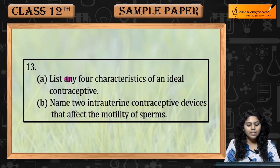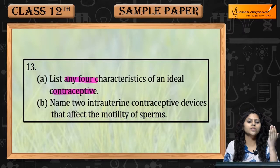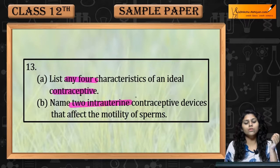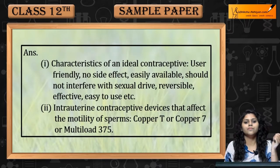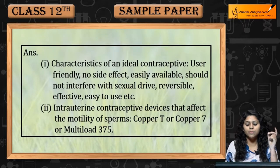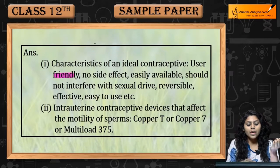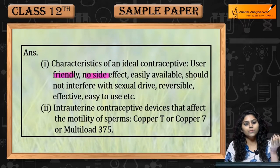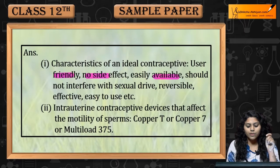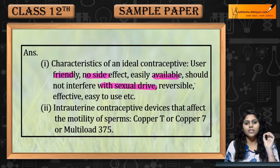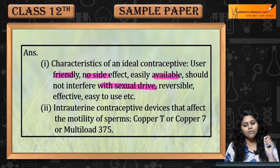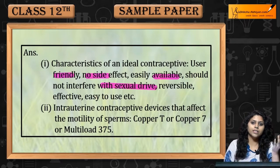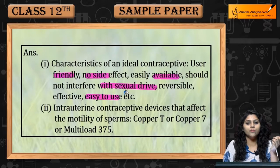Question number 13: List any four characteristics of an ideal contraceptive. An ideal contraceptive is one that is user friendly, has no side effects, is easily available, should not interfere with sexual drive, should be reversible, effective, and easy to use.